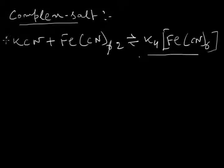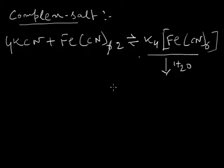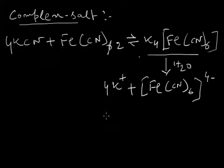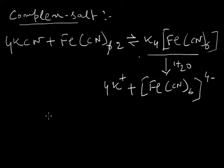The balanced equation is: four molecules of potassium cyanide react with ferrocyanide to form K₄[Fe(CN)₆]. This is a complex salt because in the presence of water it does not ionize completely — it only forms four K⁺ ions and one ferrocyanide ion. Since potassium ferrocyanide does not ionize completely in aqueous solution, it is called a complex salt. A complex salt is a salt formed when two salts react with each other and the salt formed does not completely ionize in aqueous solution.